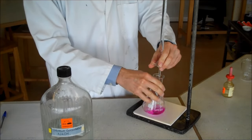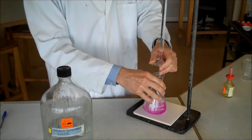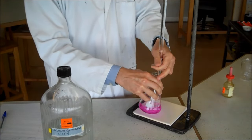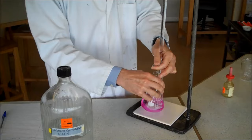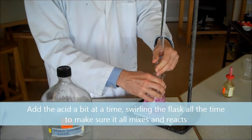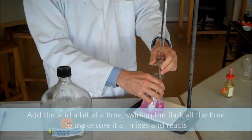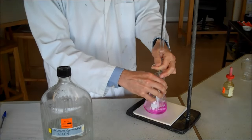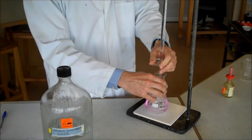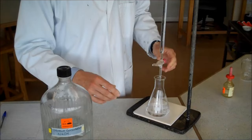Now I'm going to add a bit of acid and I swirl it round to mix it. I keep adding the acid until it goes colorless. I'm adding quite a bit at a time just to do it quickly, but I have an idea roughly of how much I'm going to need to add. And there we are. It's gone colorless.